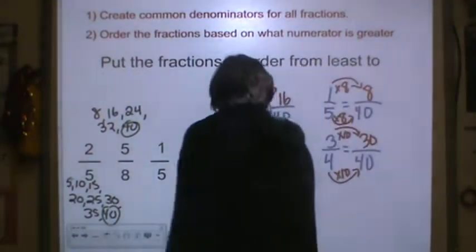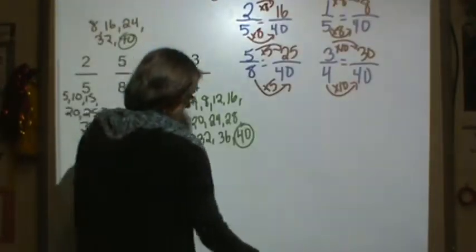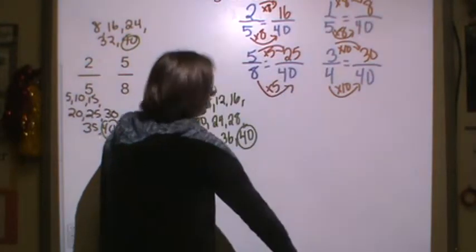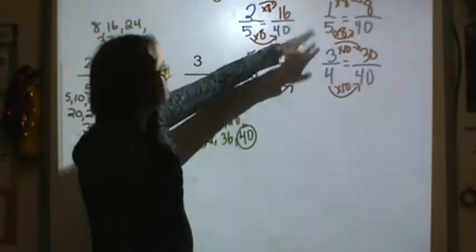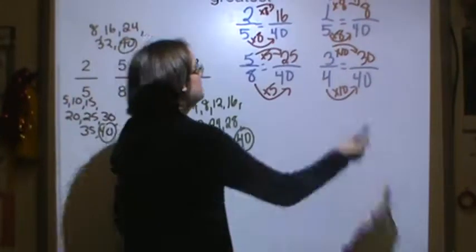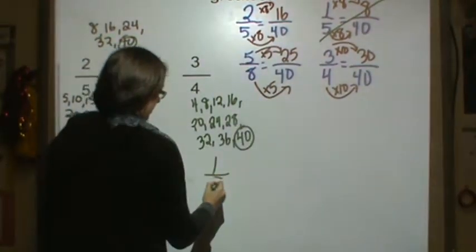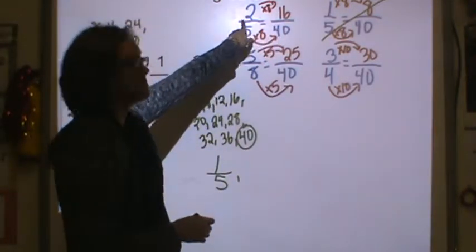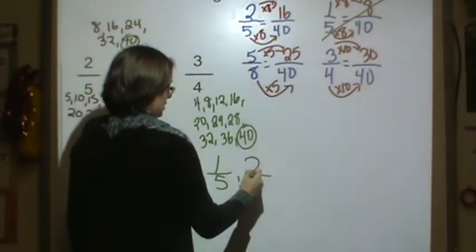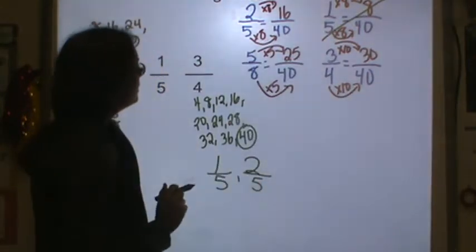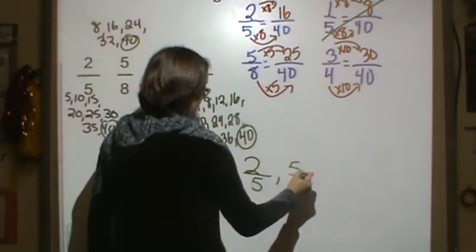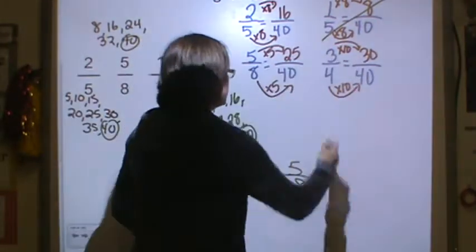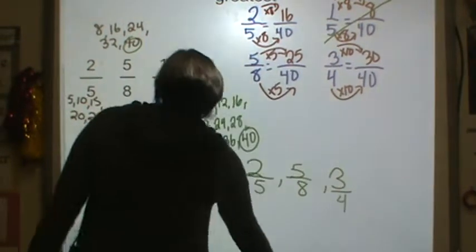Now we can put these in order from least to greatest. Let's look at my smallest numerator: 16, 25, 8, and 30. So 8 is the lowest number, which is 1/5. The next lowest is 16/40, which is 2/5. Then I've got 25/40 or 5/8, and then I have 30/40, which is equivalent to 3/4.